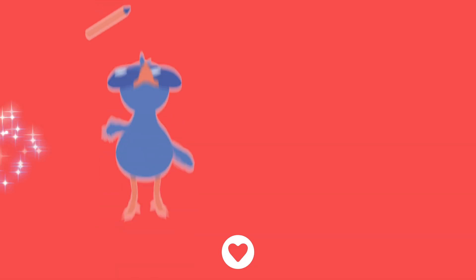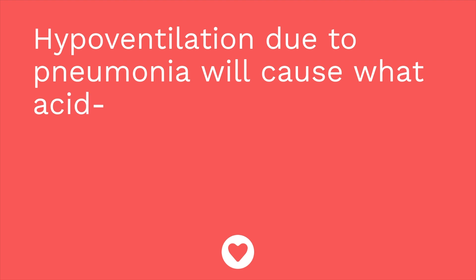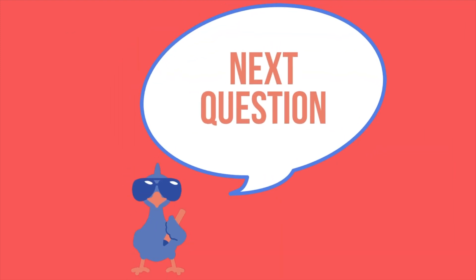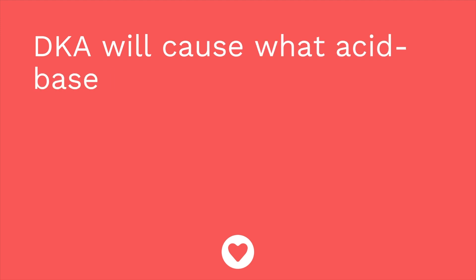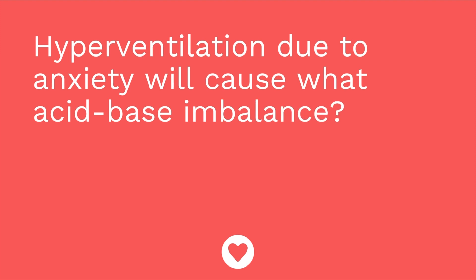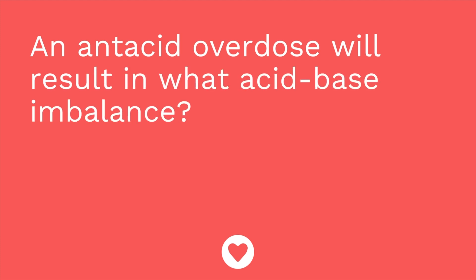It's time for a quiz — we're going to call this 'Name That Acid-Base Imbalance.' Question one: hypoventilation due to pneumonia will cause what acid-base imbalance? The answer is respiratory acidosis. Question two: DKA will cause what acid-base imbalance? The answer is metabolic acidosis. Question three: hyperventilation due to anxiety will cause what acid-base imbalance? The answer is respiratory alkalosis. Question four: an antacid overdose will result in what acid-base imbalance? The answer is metabolic alkalosis.